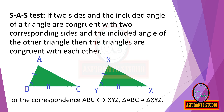S.A.S. test. If two sides and the included angle of a triangle are congruent with two corresponding sides and the included angle of the other triangle, then the triangles are congruent with each other. Now look at the figure to learn the SAS test.